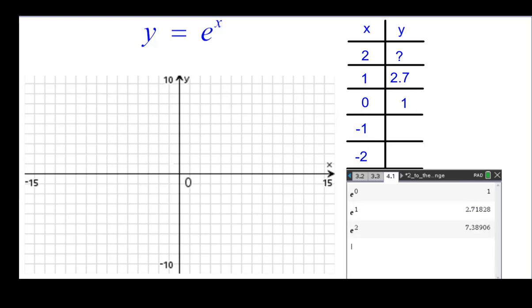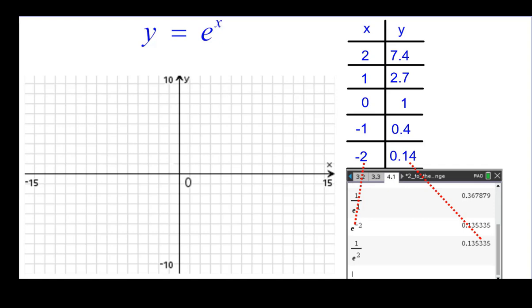e squared, with a calculator, it's about 7.4. And e to the negative 1 power is the reciprocal of e, which is about 0.4. And the reciprocal squared is about 0.14. So those are our five key points to get the curve for y equals e to the x.